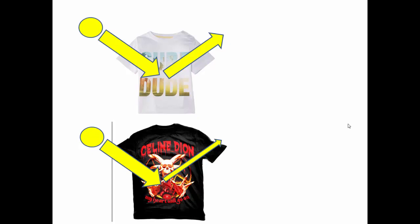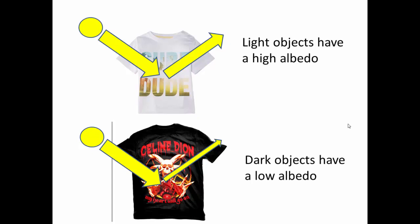What this basically means is that the person wearing the white t-shirt will stay cool, while the person wearing the black heavy metal t-shirt will start to heat up. In summary: light objects have a high albedo, dark objects have a low albedo.